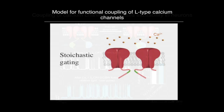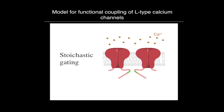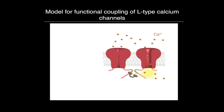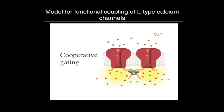All this data together led us to propose a model in which L-type calcium channels open stochastically at low potentials. But when there is enough calcium to activate calmodulin, calmodulin binds to a domain of the C-terminus of the channel called the pre-IQ domain. Calmodulin then bridges an interaction between the channels, and this physical interaction results in an increase in open probability — the channels open at the same time, open for longer, and more calcium enters the cell, regulating excitability.